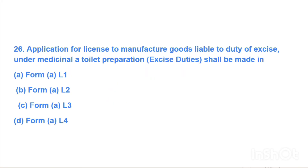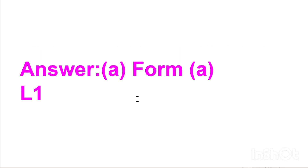Next question: Application for license to manufacture goods liable to duty of excise under Medicinal and Toilet Preparations (Excise Duties) Act shall be made in — Option A: Form AL1, Option B: Form AL2, Option C: Form AL3, Option D: Form AL4. Answer is Option A, Form AL1.